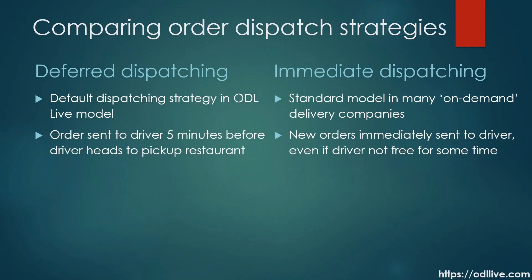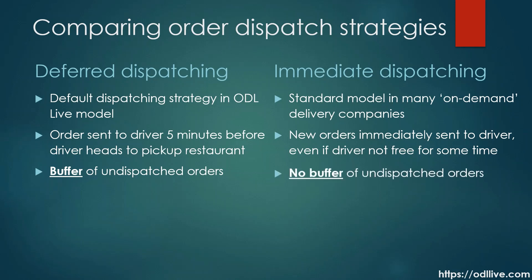Immediate dispatching deals with this process differently. A new order is sent to the driver as soon as it's booked, even if the driver won't head to the pickup restaurant for another half an hour. With deferred dispatching, the optimiser will hold back a buffer of undispatched orders, shown as the dotted line journeys in the previous video clip. In that clip, we held back up to 150 undispatched orders at peak times. Conversely, with immediate dispatching, there is no buffer of undispatched orders held back.